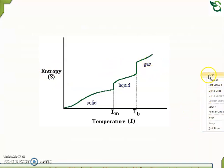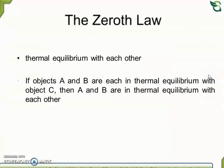This is about the third law of thermodynamics. One more law is the zeroth law, that is thermal equilibrium with each other. This law states that if A and B are each in thermal equilibrium with object C, then A and B are in thermal equilibrium with each other.